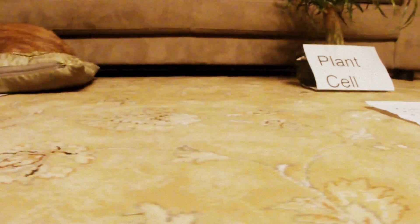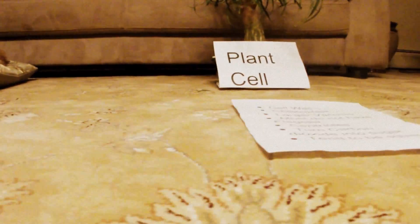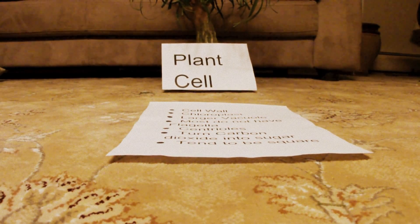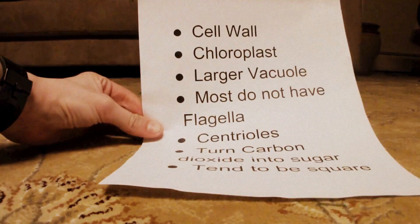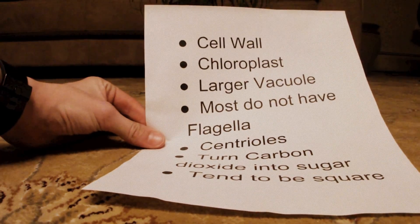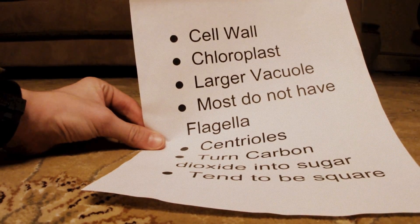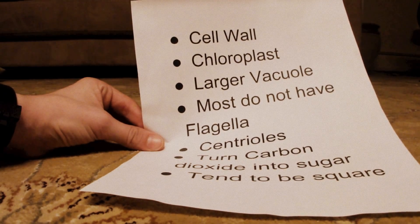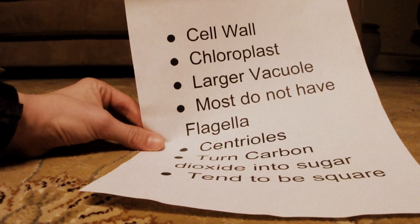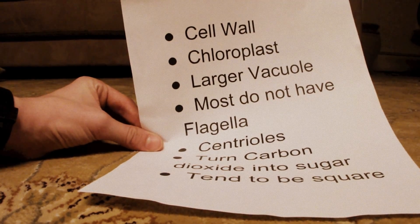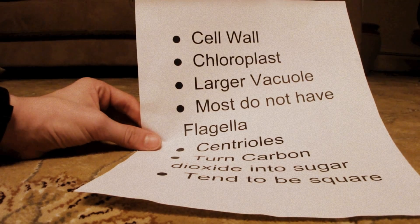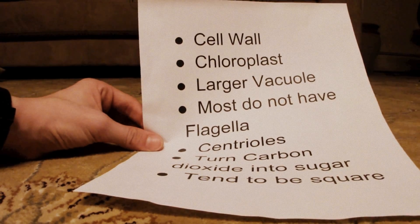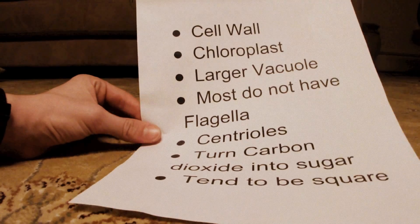Next we have the plant cell and things that are specific to it. First we have the cell wall, which protects and supports the cell. Then we have the chloroplast, which performs photosynthesis. Then we have a larger vacuole — larger than the animal cell — which holds water and food and also supports the cell.